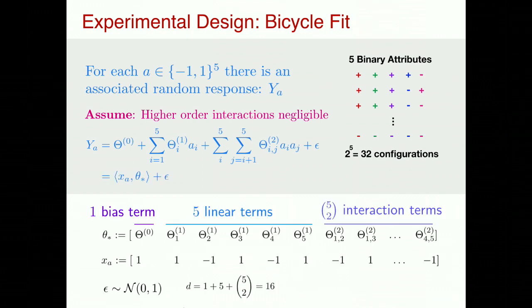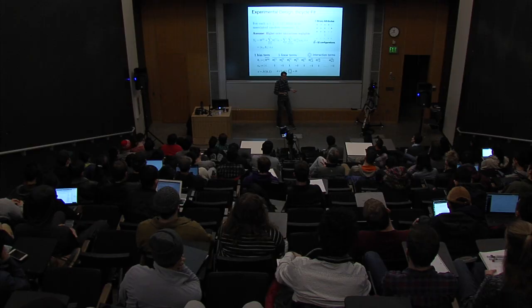This is an inconvenient form, so I'll expand it into a vector. I'll take all the coefficients — theta_0, theta_1, theta_2 — the bias, linear, and interaction terms — put them into one big vector theta_star, which is fixed but unknown. For each configuration a, I define a corresponding vector x_a with entries in {-1, +1} that encodes this. So every measurement can be written as x_a dot theta_star plus Gaussian noise. This is just a notational convenience that makes the rest of the talk much easier.